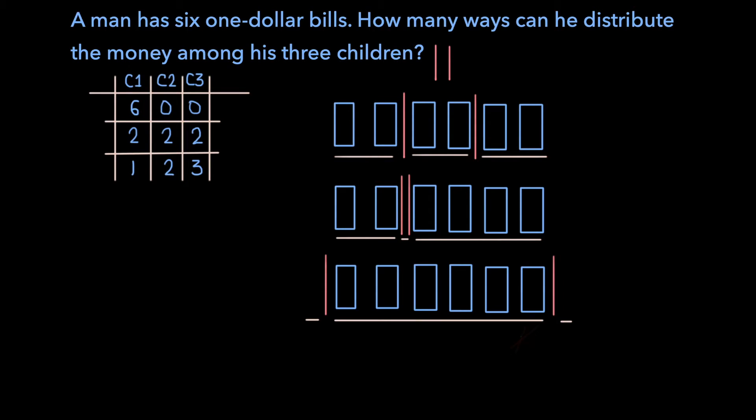And so we can see that this problem boils down to finding the number of ways we can place the two dividers amongst the $6 bills, since each unique way that the two dividers can be placed is a unique way the money can be split up.